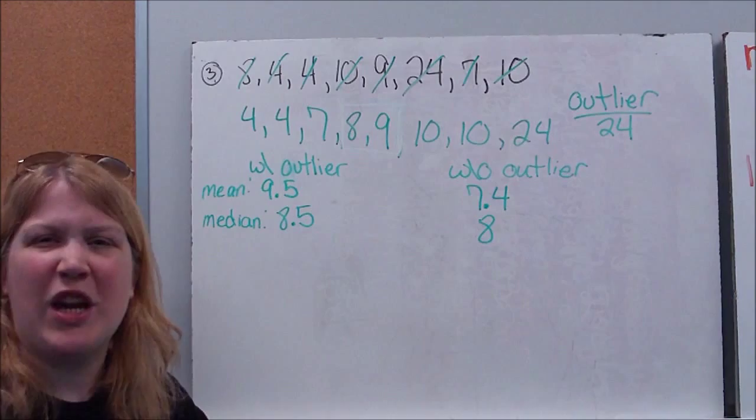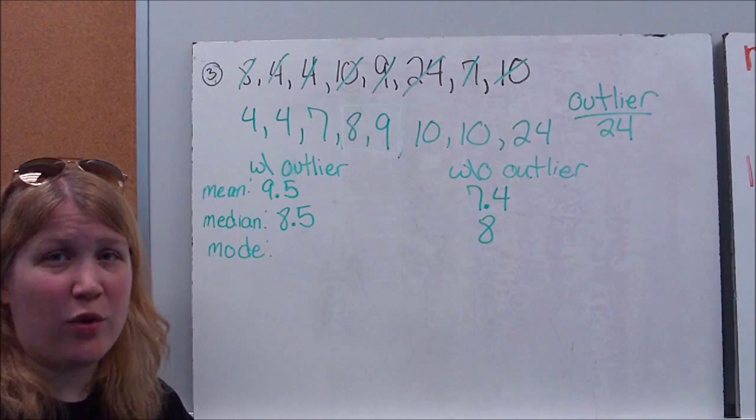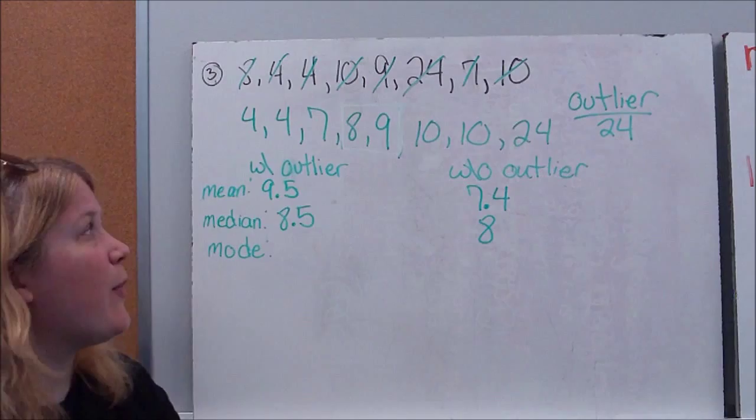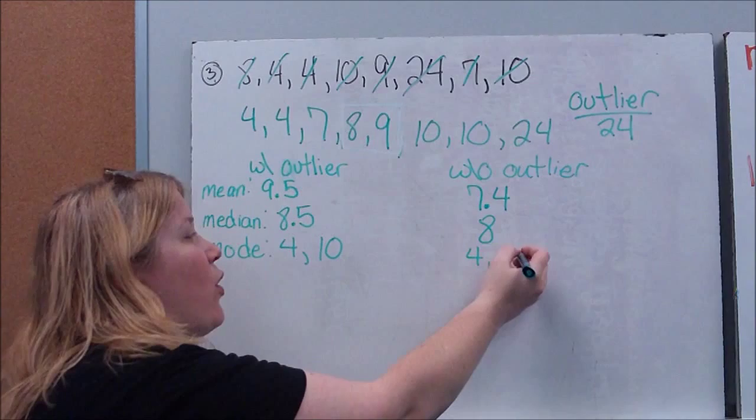Finally, we want to look for a mode. The mode, again, remember I told you sometimes there's no mode, like in the first example. Sometimes there's multiple modes. There's multiple modes here. I have two 4s. I have two 10s. So my mode is 4 and 10. And you'll notice even with the outlier or without the outlier, my mode is exactly the same. Your outlier is not going to make a difference to that.